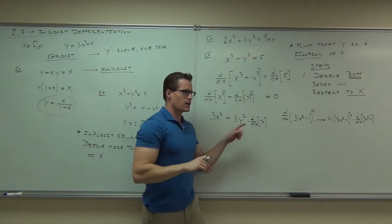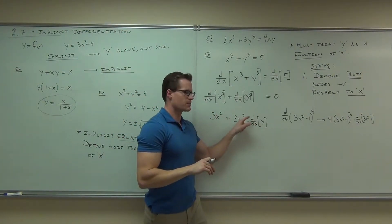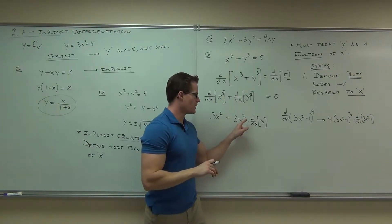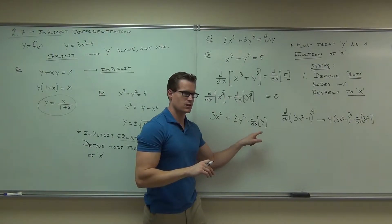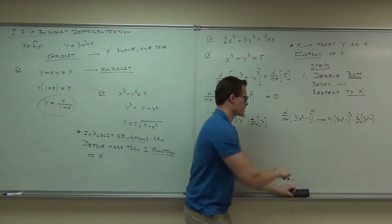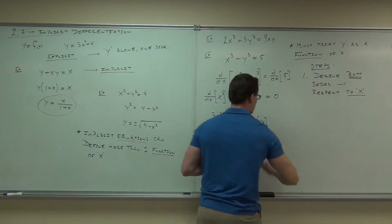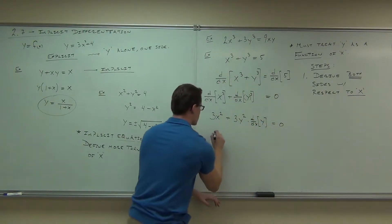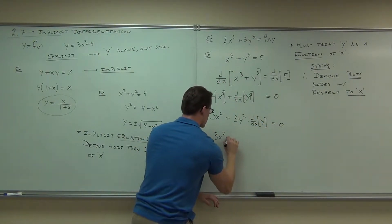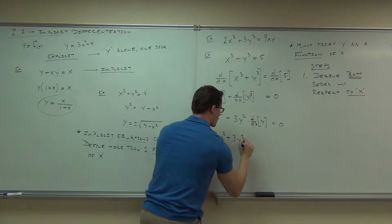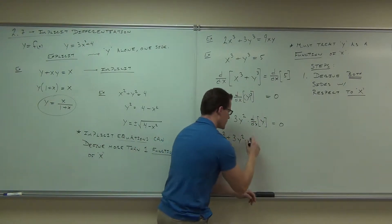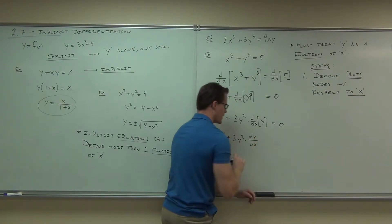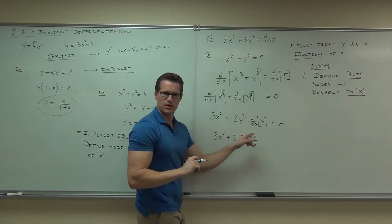Now, here's the weird thing. d dx of y, that says this. Check it out. That says the derivative of y with respect to x. Does it not? The derivative of y with respect to x. This says the derivative of y with respect to x, but then so does this. The derivative of y with respect to x. Doesn't that say the same thing here?